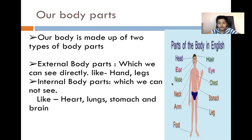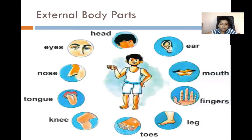So here is the chart. You can see all of the body parts that we have and other types of parts. So we have head, eyes, nose, and tongue.